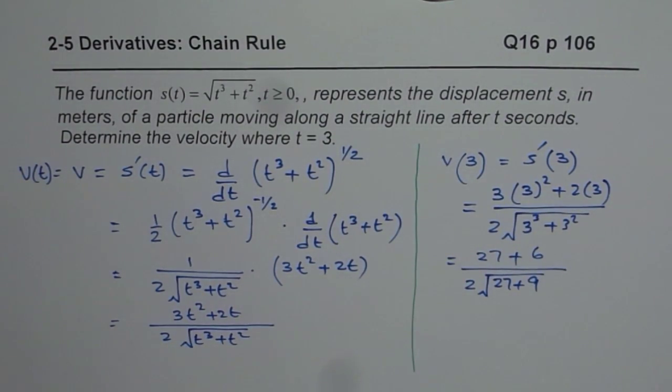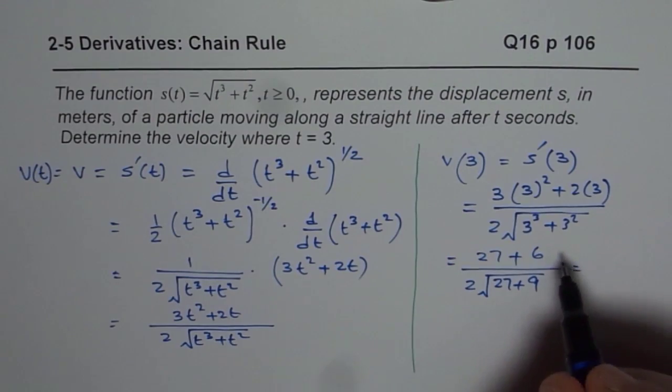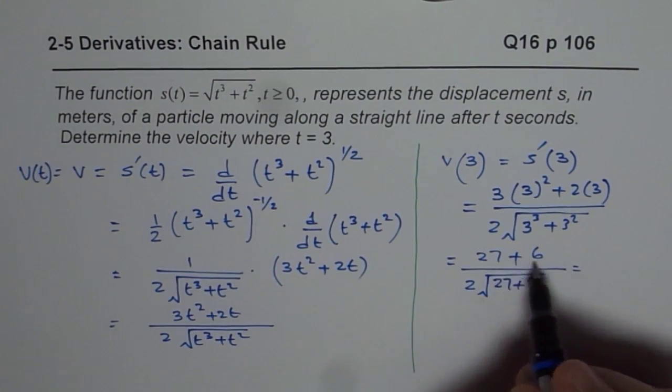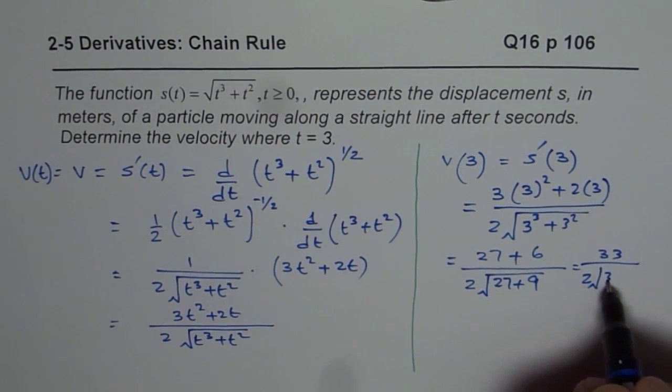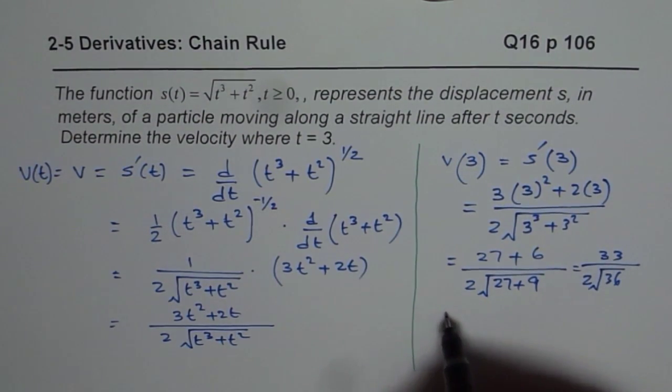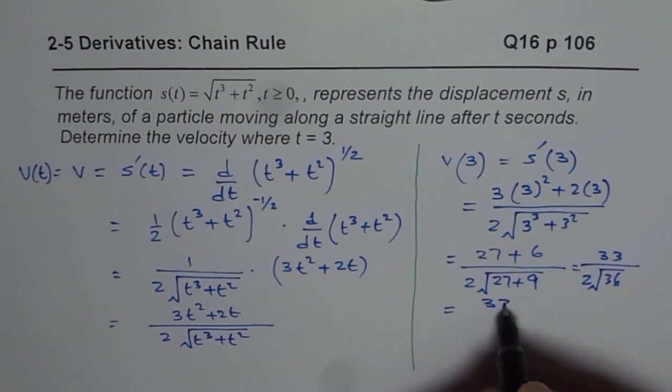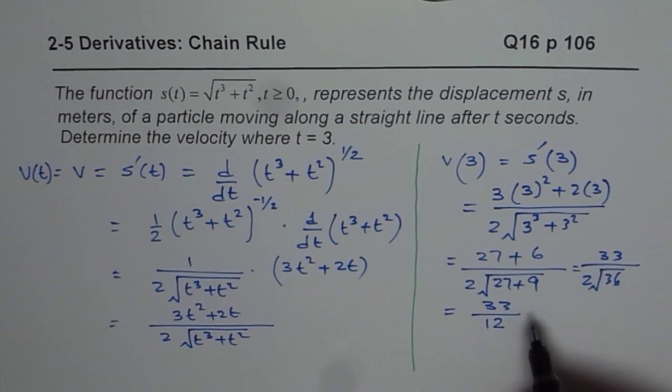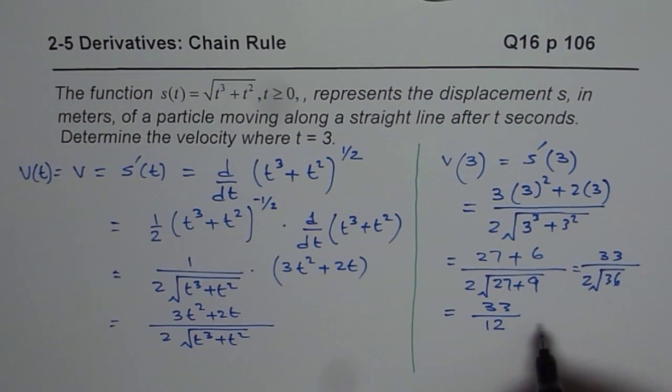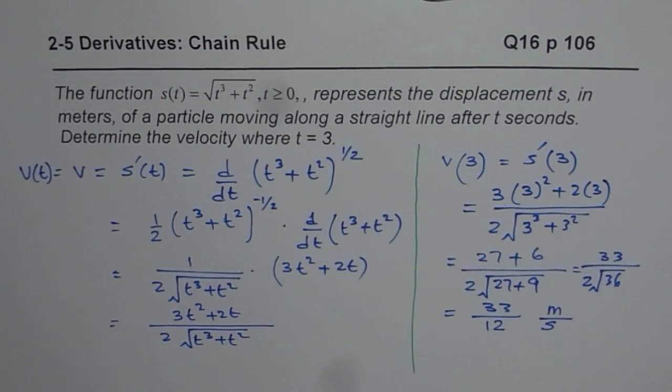You can actually use calculator at this stage and find the answer. We have 33 divided by 2 square root of 36 which is 6. So we have 33 over 6 times 2 is 12. The units are meters per second, so don't forget the units. That is your answer for the given question, I hope that helps, thank you.